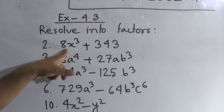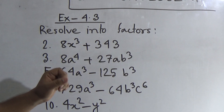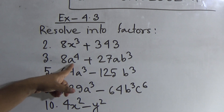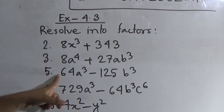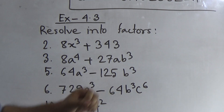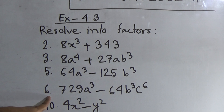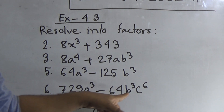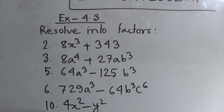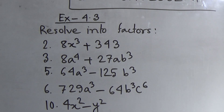Question number 2: 8x³ + 343. Question number 3: 8a⁴ + 27ab³. Question number 5: 64a³ − 125b³. Question number 6: 729a³ − 64b³c⁶. And question number 10: 4x² − y². In order to solve these expressions into factors, we need to know some formulas. Please notice the board.